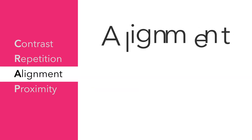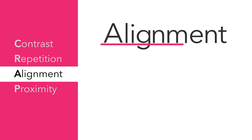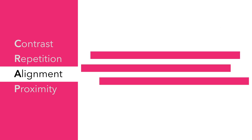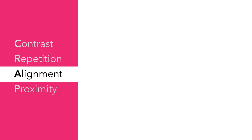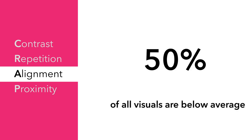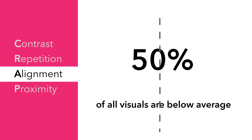A is for Alignment. Our brains want everything to be organized and they struggle when things are not in alignment. Compare these lines which are all over the place to these lines which are intentionally placed in alignment with one another. Let's look at this slide — there's something off about the alignment here, can you spot it? The text is slightly off-center; by moving the text to the middle, the slide looks more polished and aesthetically pleasing.